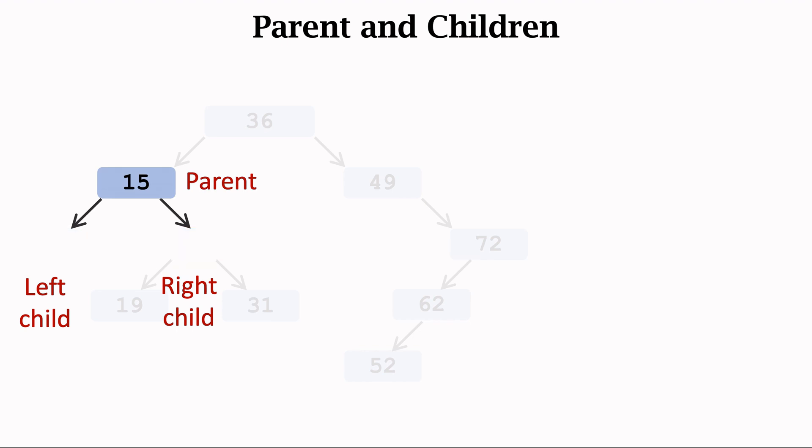The edges point to vertex 6 and vertex 22. Vertex 6 is called the left child. Vertex 22 is called the right child.